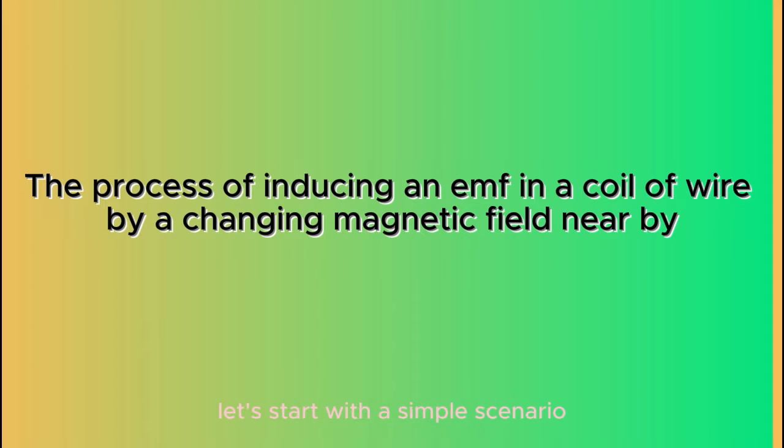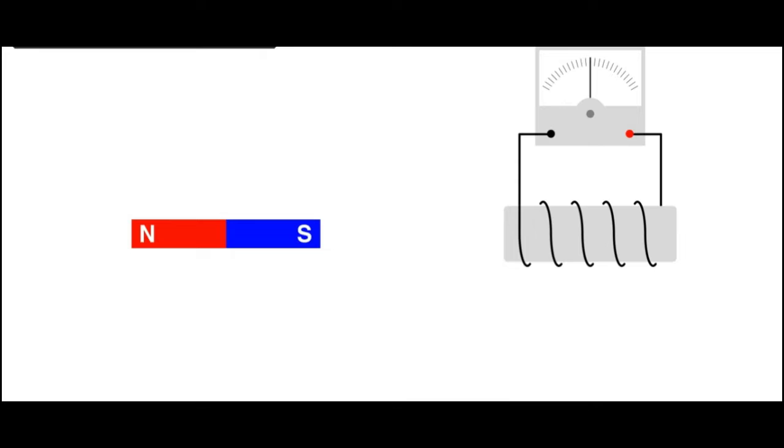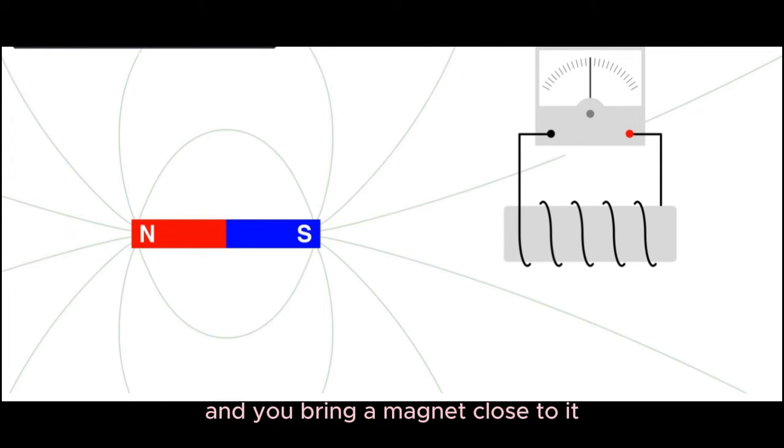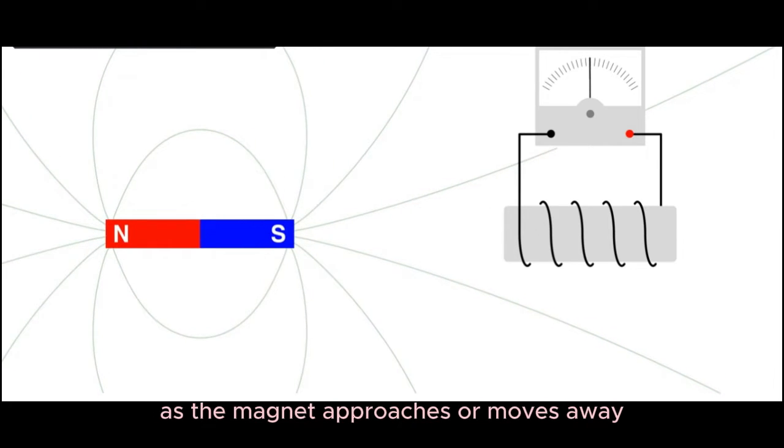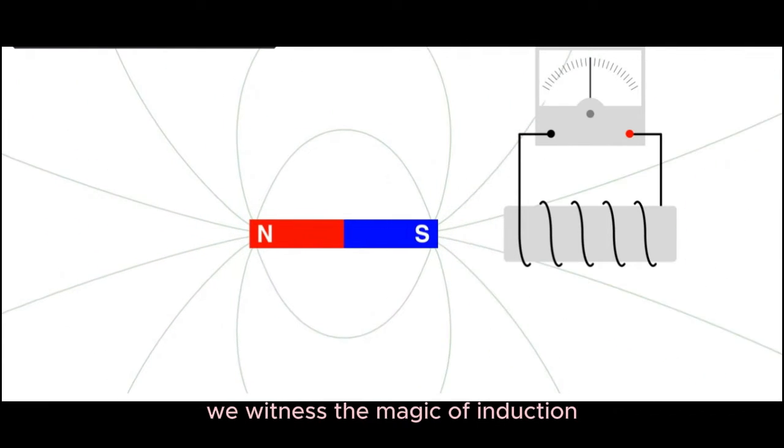To understand this, let's start with a simple scenario. Imagine you have a coil of wire, and we bring a magnet close to it. As the magnet approaches or moves away, we witness the magic of induction.